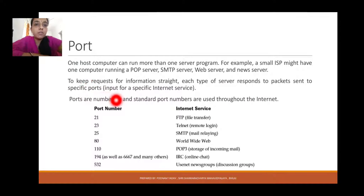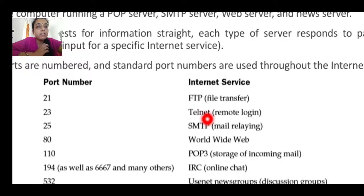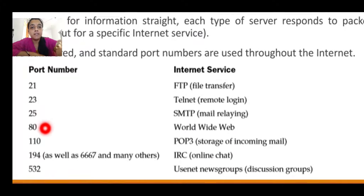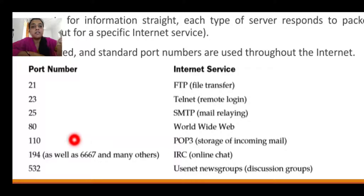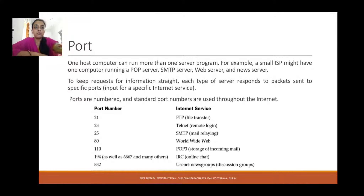Every port will be used throughout the internet. Sub-standard port numbers are also allowed. The port number for FTP is 21. The port number for Telnet is 23. The port number for POP3 is 110. The port number for HTTP is 80. IRC (Internet Relay Chat) uses port number 194. So the standard port number is allotted for a program which can be used or run for a server.